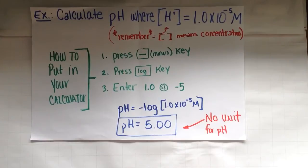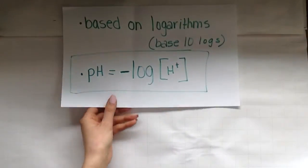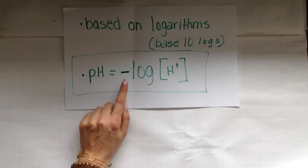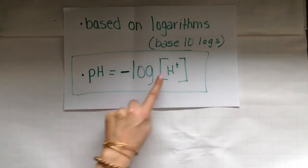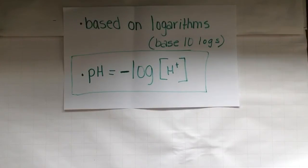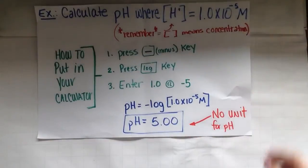So in order to do this, I have to plug it into my equation. So let's go back here. Here's my equation. pH is equal to the negative log of that H plus concentration. So you're going to need your calculator. Take a second now and pull it out so you can see what buttons we're talking about.